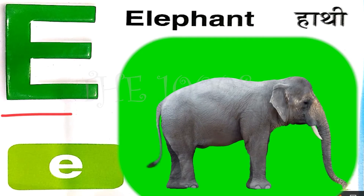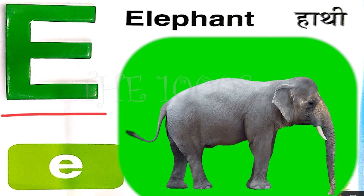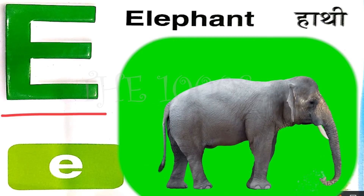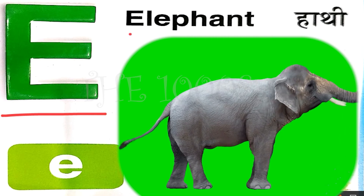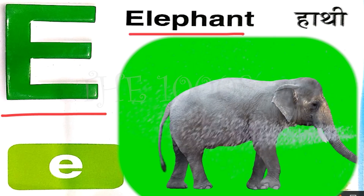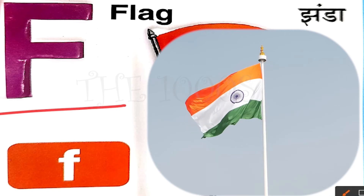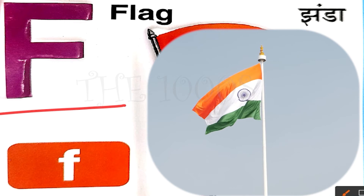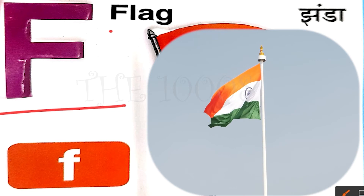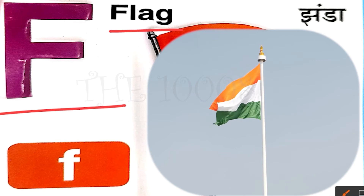E for elephant, elephant means hathi. F for flag, flag means jhanda.